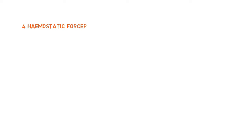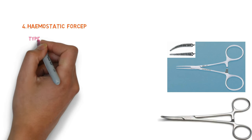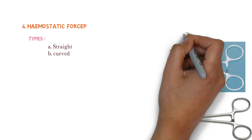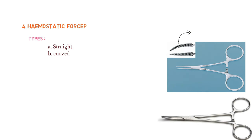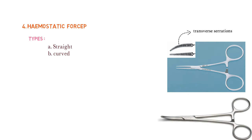Our next instrument is hemostatic forceps, also known as artery forceps. This instrument is used in many surgical procedures to control bleeding. There are two types: straight and curved. The instrument has tapering ends with transverse serrations on the inner side for hemostasis.